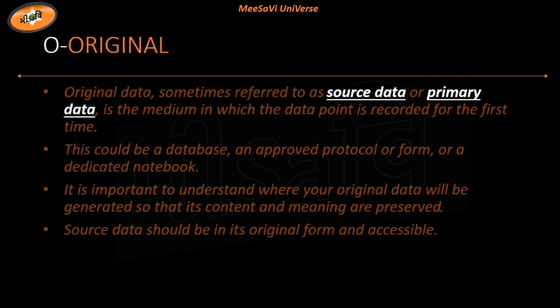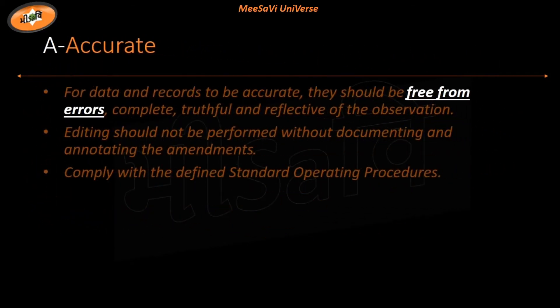Next, O for Original means that if I have any work, its source data or primary data — as it is — I need to be able to access the raw data in its original form. Now, A for Accurate means that if my data is generated there should be no error. If I have any change in data, it should be properly captured and documented as per my company's SOP and maintained.